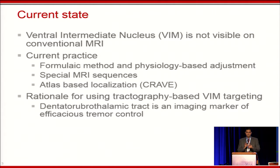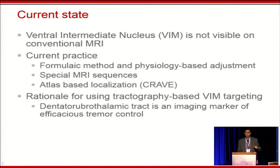Currently, the ventral intermediate nucleus is not visible on conventional MRI imaging, both 1.5 tesla and 3 tesla. We use formulaic methods wherein the ACPC plane, you identify how many percentage points of the ACPC length, you choose the anterior coordinate, and laterally you go based on either midline measurements or from the ventricle wall. During the focused ultrasound procedure, you can do adjustments based on feedback of side effects as well as efficacy.